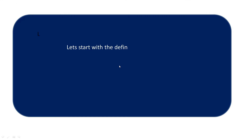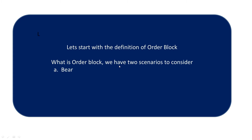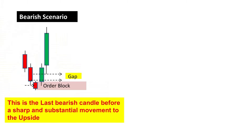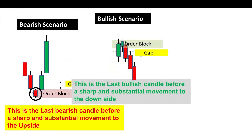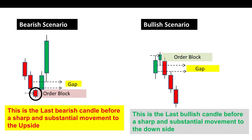Let's start with the definition of order block. What is an order block? We have two scenarios to consider: 1. Bearish order block, and 2. Bullish order block. In the bearish scenario, this is the last bearish candle before a sharp and substantial movement to the upside. And in the bullish scenario, this is the last bullish candle before a sharp and substantial movement to the downside.